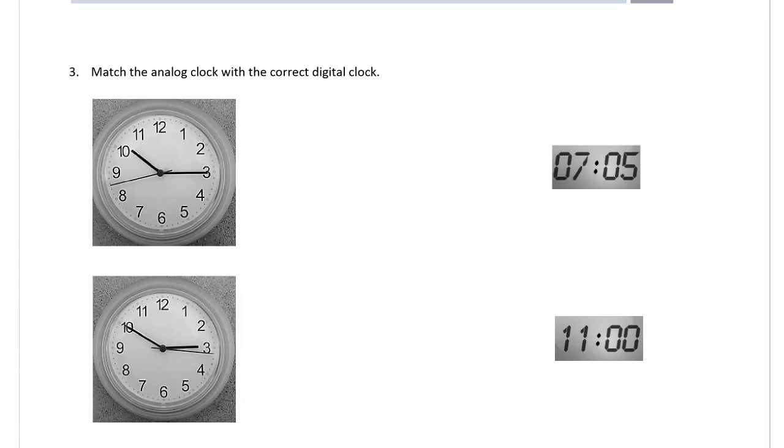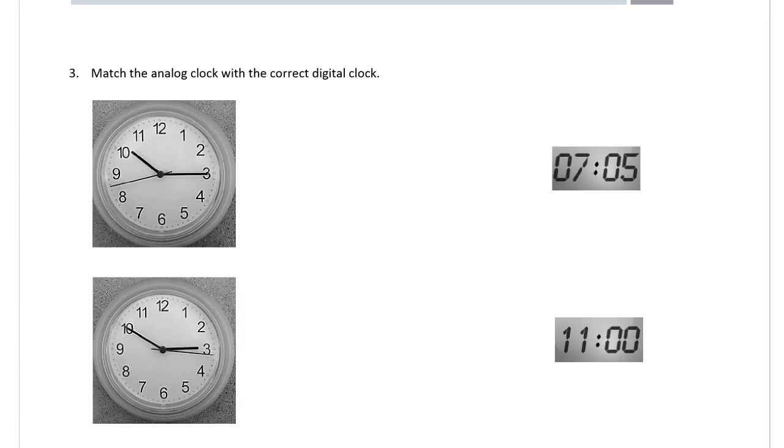Number three. Match the analog clock with the correct digital clock. I'm going to work on some colors here. Thinking about the Judy clocks that we use in school, the hour hands are short and those are usually colored red. And the minute hands are long and those are usually colored blue.